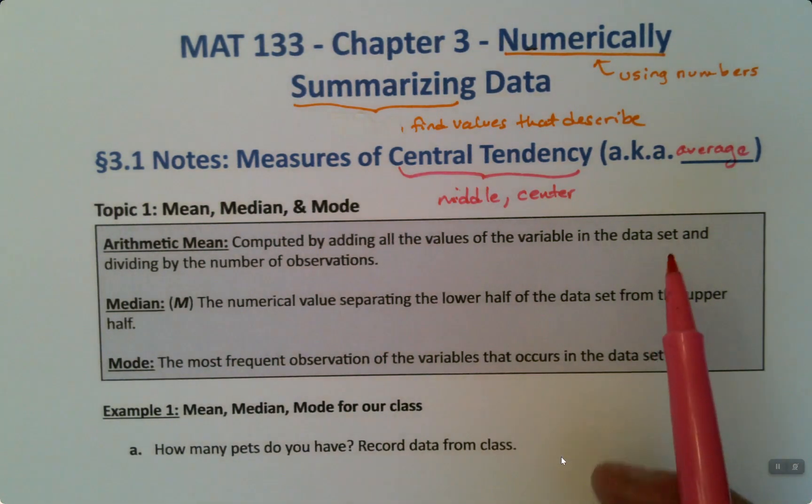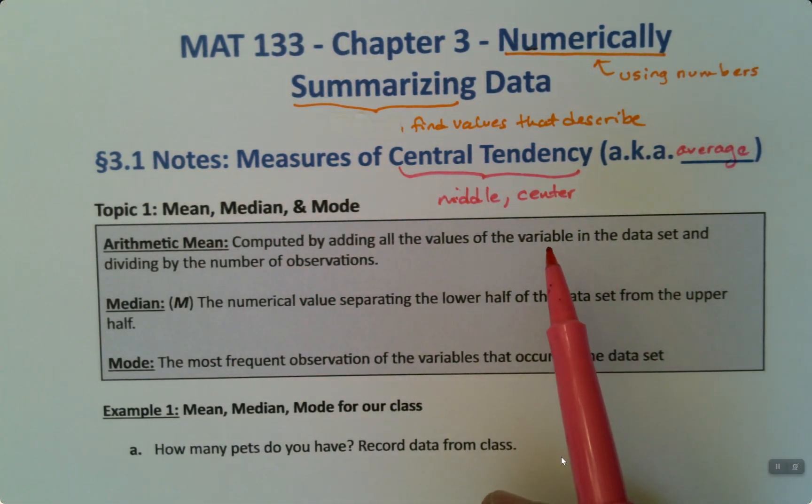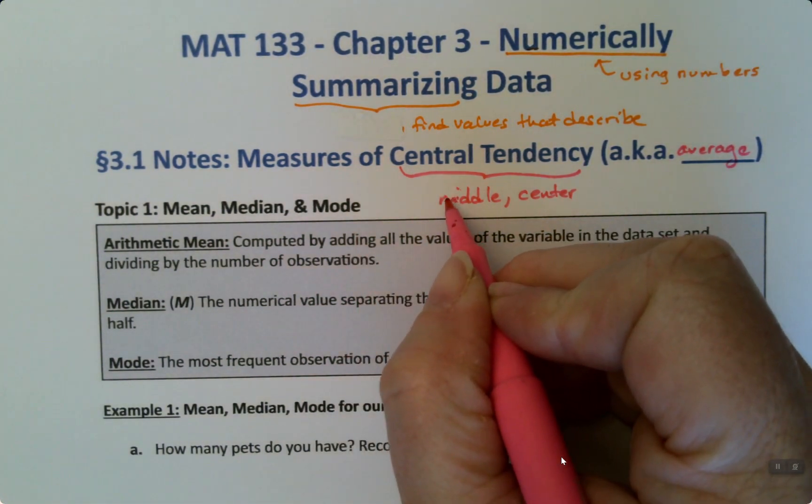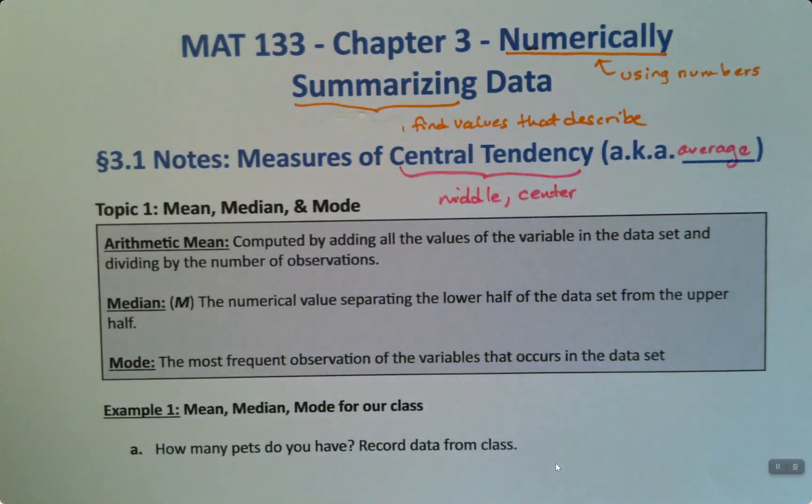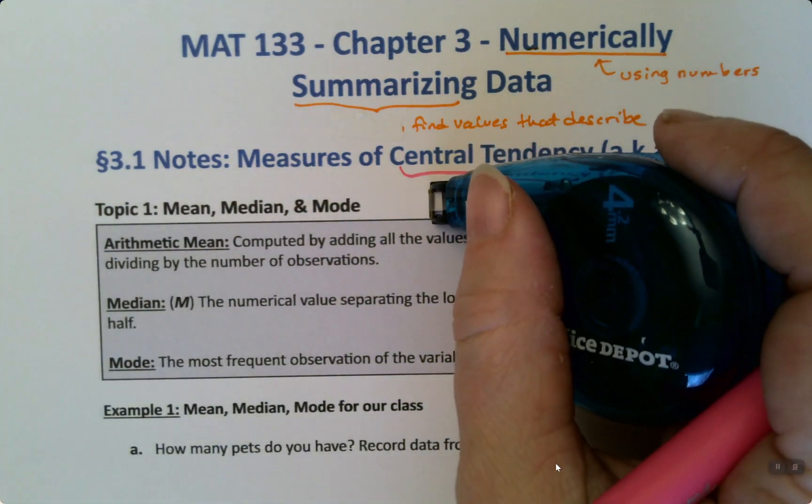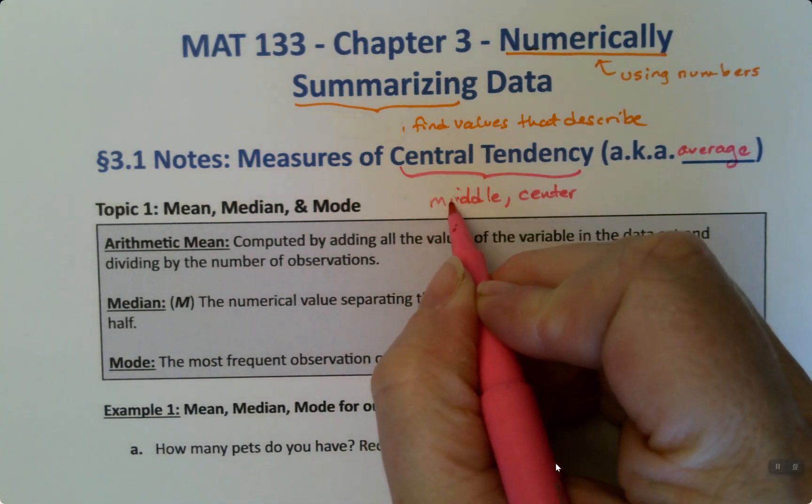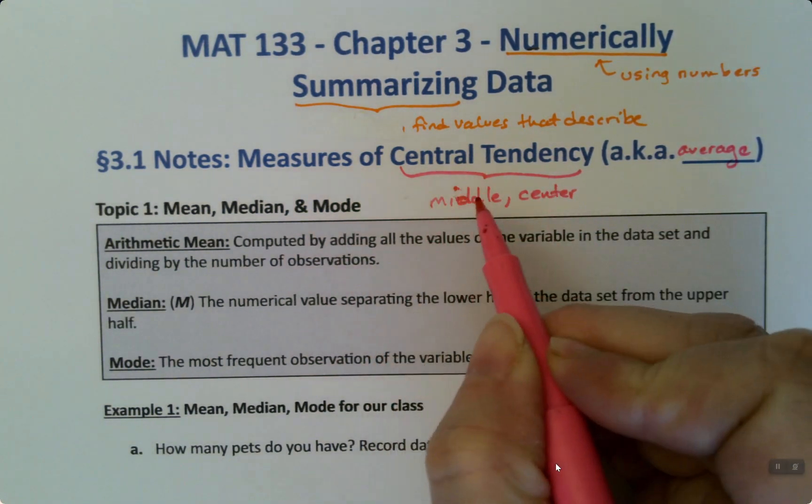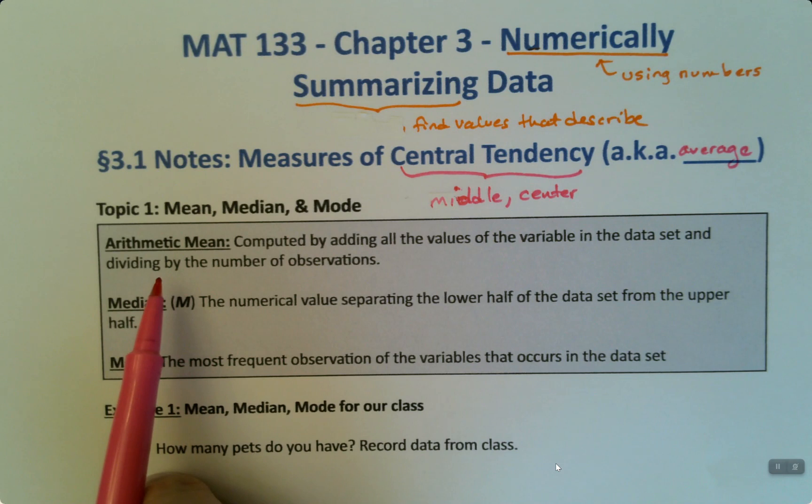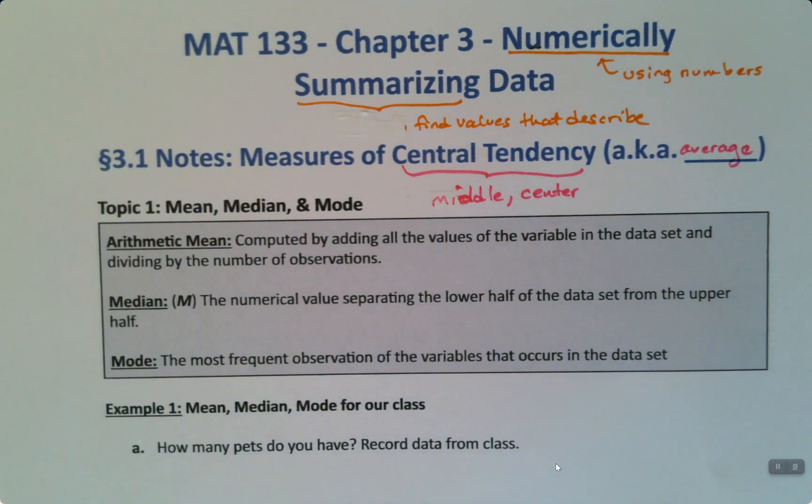Now, there's one average that most people think of when they think of average. As a matter of fact, it's the one that, for example, the average command in Excel. So if you know anything about Excel, you know that if you type average, it wants a particular one. And the one that it's usually doing is this one, the arithmetic mean. The arithmetic mean is the one that most students think of when they think of average. It's the one where you add them all up and divide by how many there are. But that's not the only average.